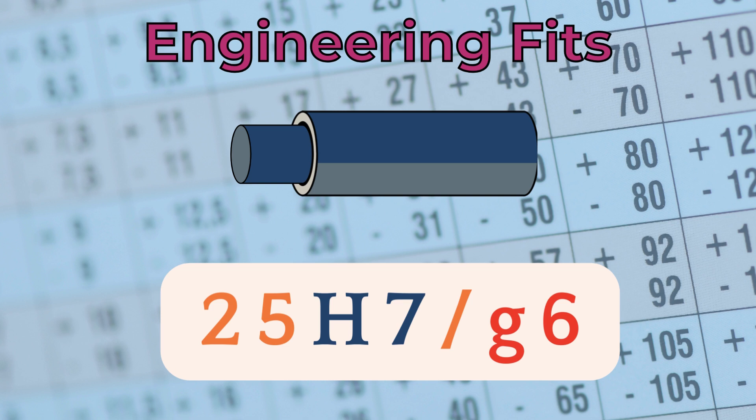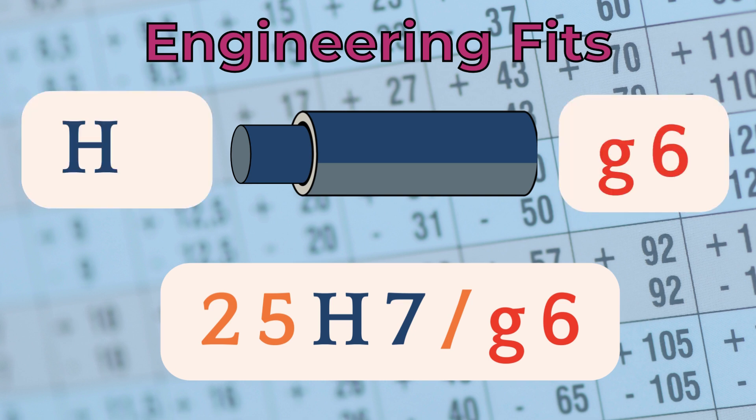For example, 25H7-G6 means an assembly of two features with a nominal size of 25mm, where the shaft has a tolerance class G6, and the hole has a tolerance class H7.